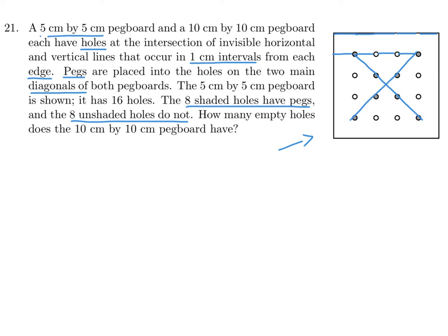They're saying do the exact same process but with a 10x10cm pegboard. Let's make a 10x10 and illustrate what's going on. This is a 10x10, so starting 1cm from the edge, we make holes. Going from marker 0 to 10cm, we get holes at 1, 2, 3, 4, 5, 6, 7, 8, 9.